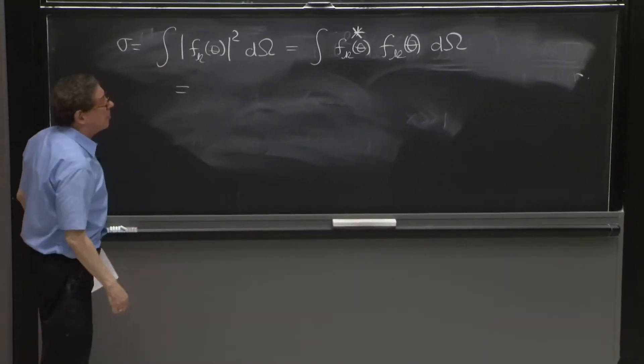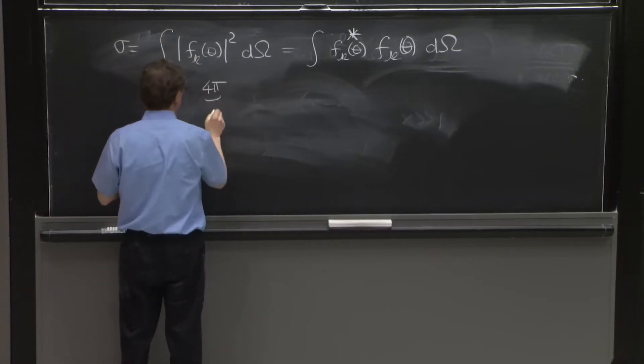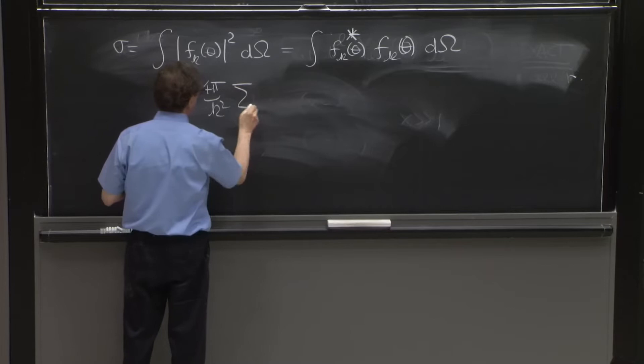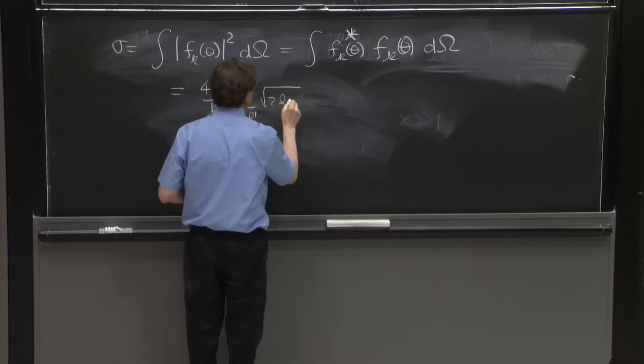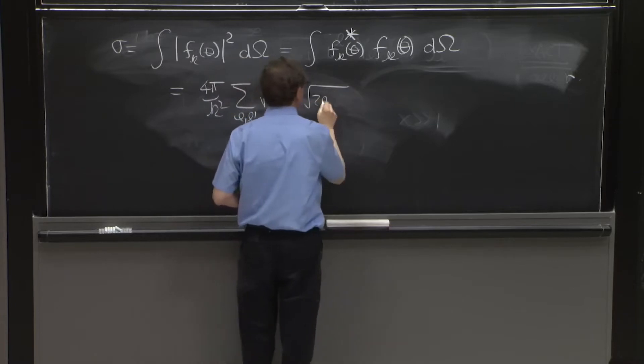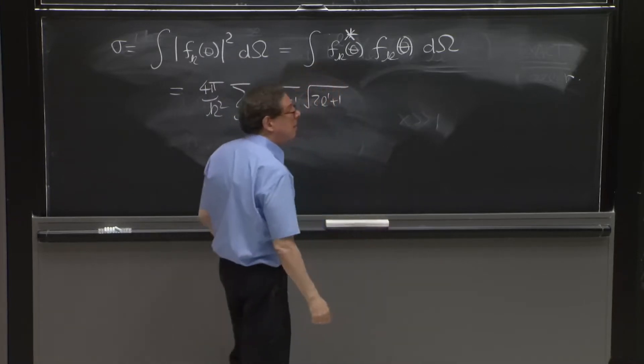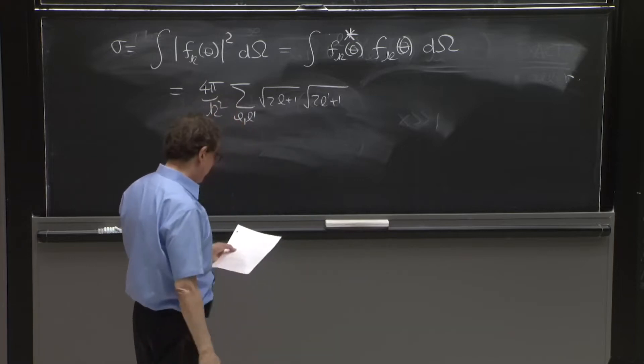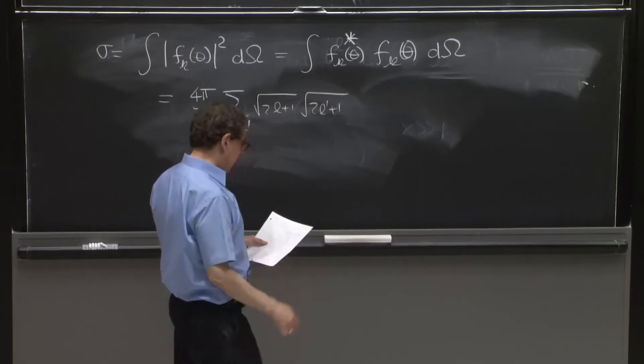And we can plug all this in. So what do we have? We do this because the answer is very simple. We get a 4 pi over k squared. We have a sum over L and L prime, because we have two factors, 2L plus 1, 2L prime plus 1. The phase shift for L prime and the phase shift for L.